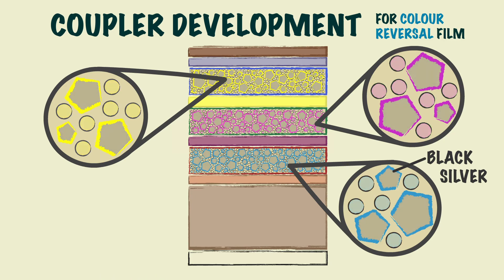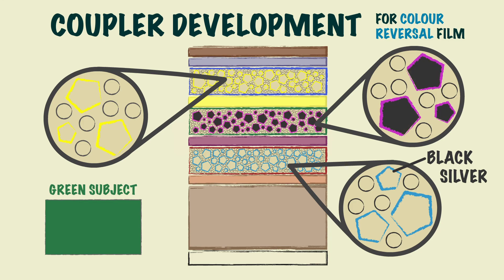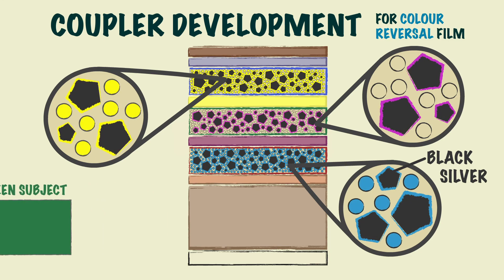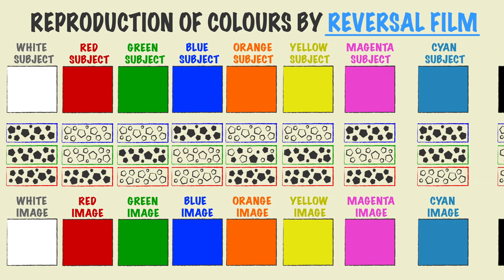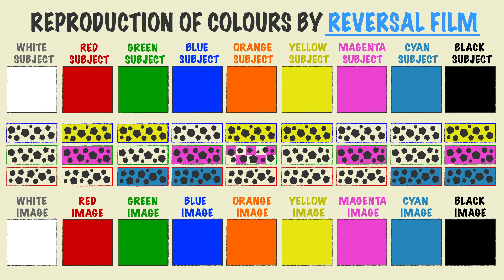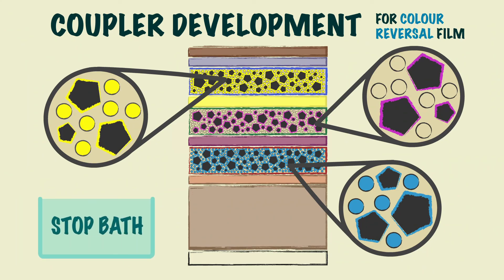For example, if the subject was green, there would be a reaction on the green sensitive layer, but in this case dye would only form on the blue and red layers, creating yellow and cyan, and the combination of yellow and cyan together creates green. This is the same when representing all other colours as well. This process is then stopped again by the stop bath, where the yellow and magenta filter layers and sensitising filter dyes are removed and washed away.